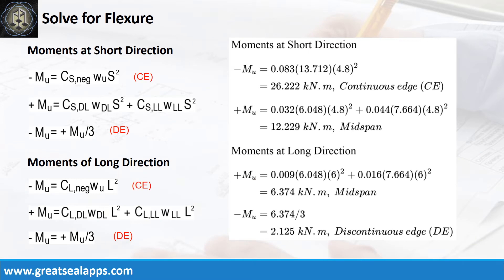Moments at short direction: negative moment at continuous edge is 26.222 kN·m/m. Positive moment at mid-span is 12.229 kN·m/m. Moments at long direction: positive moment at mid-span is 6.374 kN·m/m. Negative moment at discontinuous edge is 2.125 kN·m/m.